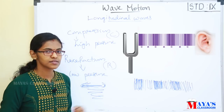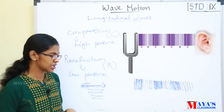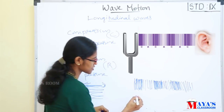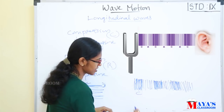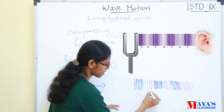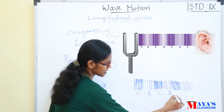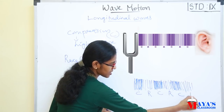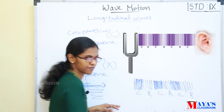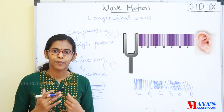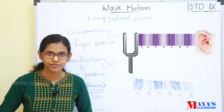In a longitudinal wave, there is a high pressure area — a compressed area — and a rarefaction. Compression, rarefaction, compression, rarefaction alternate. If you look at the current surface area, what is it? In the transverse wave, there are crests and troughs, and the distance is the wavelength.